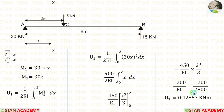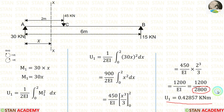EI = 2800 kNm². Applying this value, we get U1 = 0.42857 kNm.